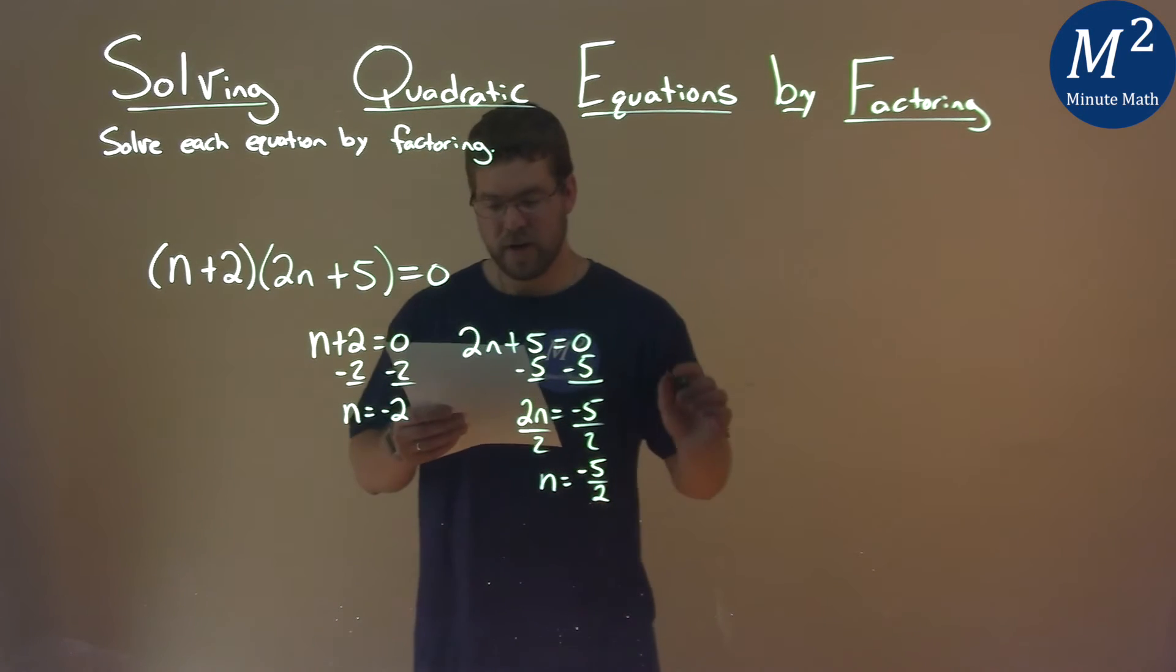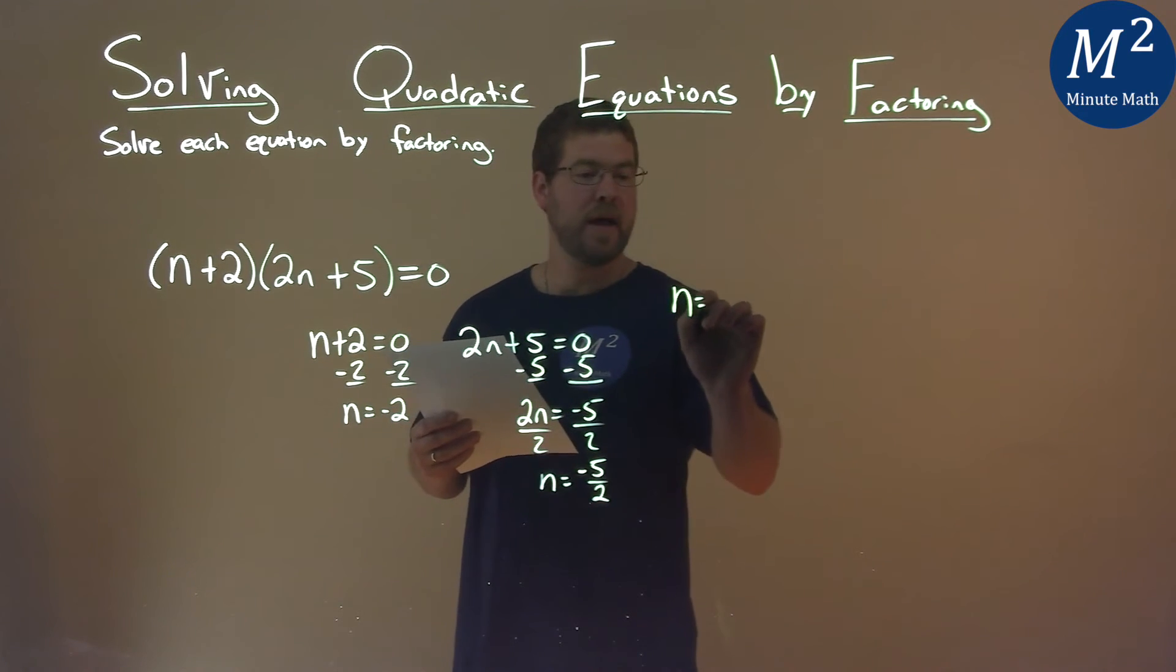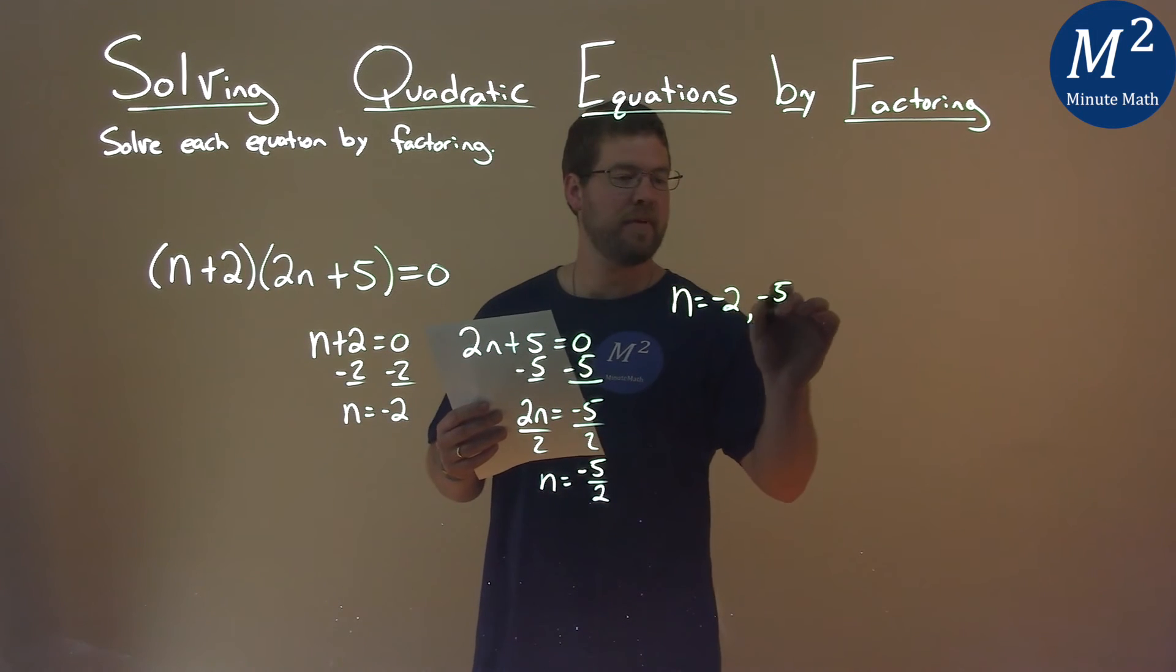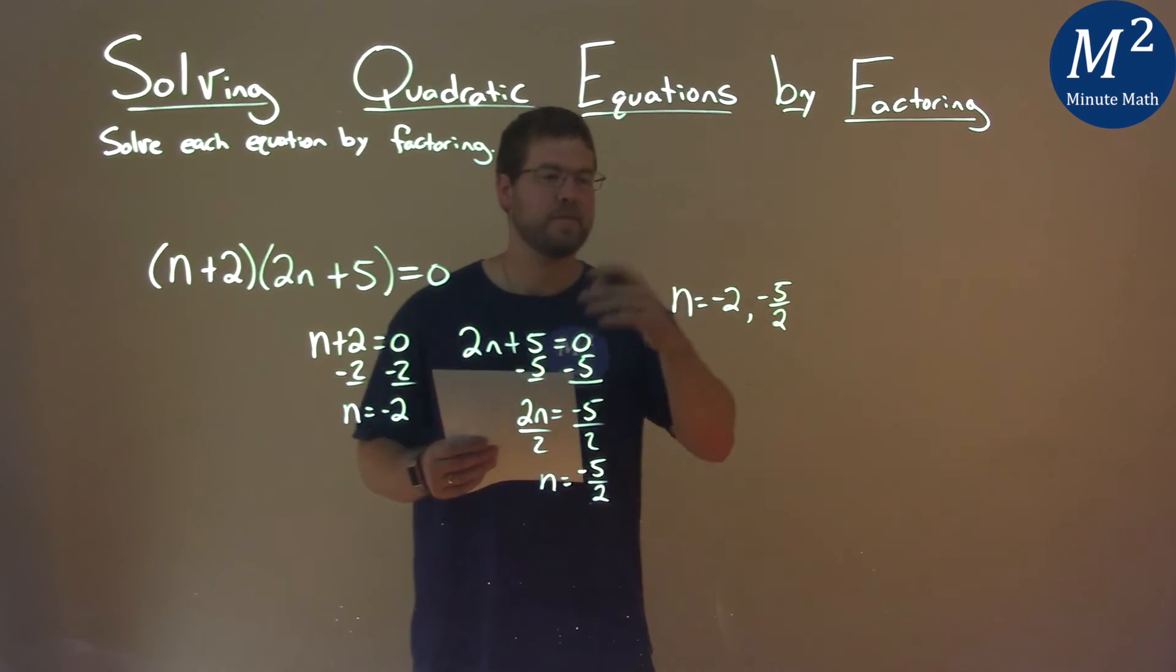So my two solutions I can write as one statement: n equals negative 2, and it also equals negative 5 halves. That is our final answer.